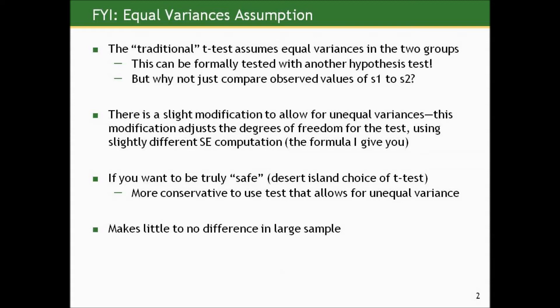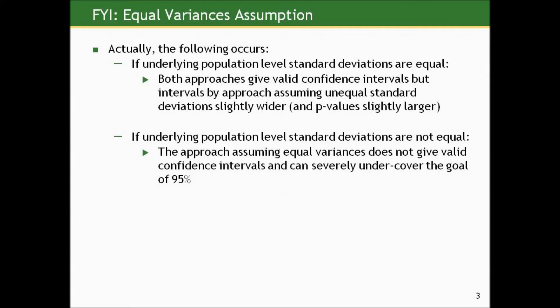Here's my take. If you want to be truly safe — if you only had one t-test to take with you on vacation — you may as well take the one that allows for unequal standard deviations. This actually works well in all situations. If the underlying population-level standard deviations are equal, then both approaches give valid confidence intervals. But the intervals from the unequal approach are slightly wider and the p-values slightly larger — so it's slightly more conservative and less efficient.